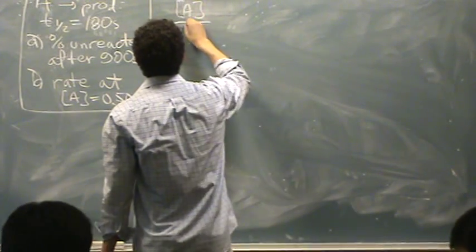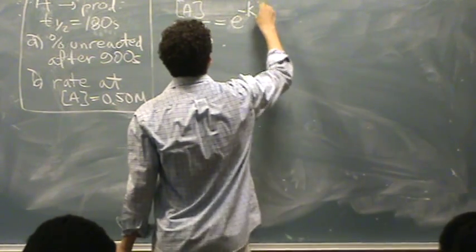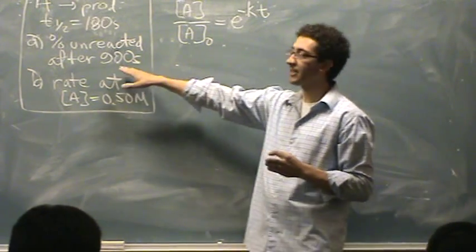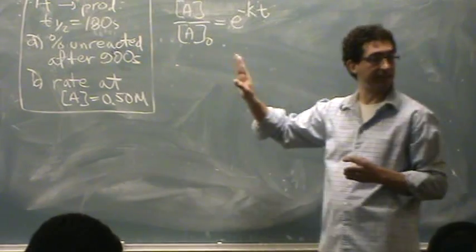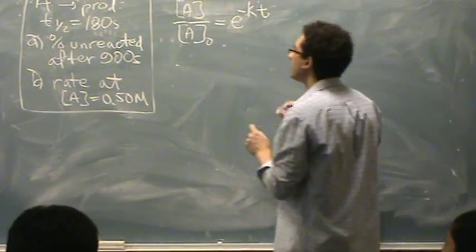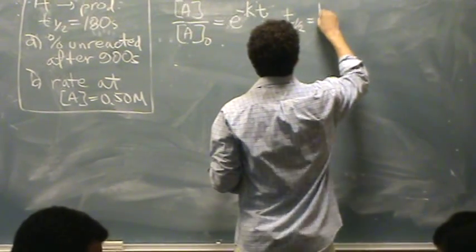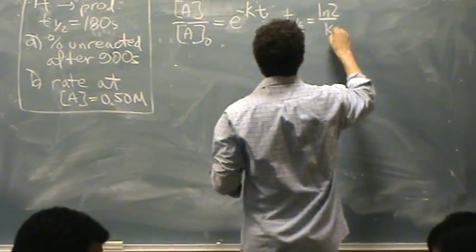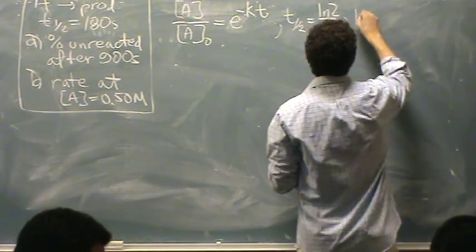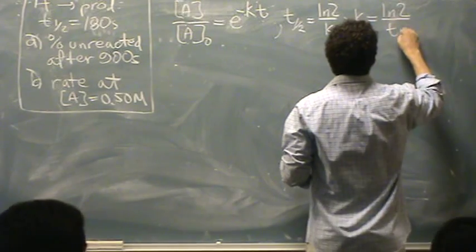[A] over [A₀] equals e to the minus kt. Let's see what we have. I have t actually, 900 seconds, so I've got t. K, I don't have directly. However, I know that the half-life equals natural log of 2 over k for first order. And since I have the half-life, I can find k. So let me rewrite this. K equals the natural log of 2 over the half-life.